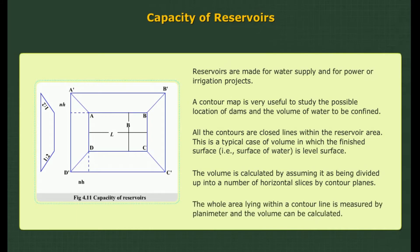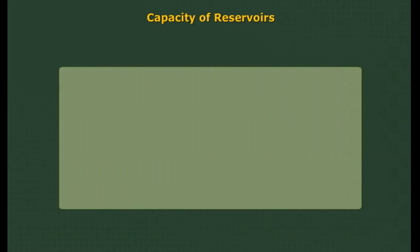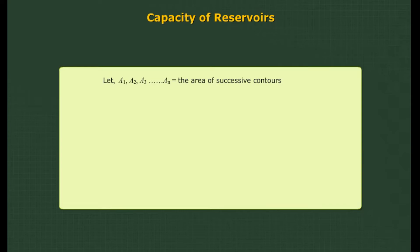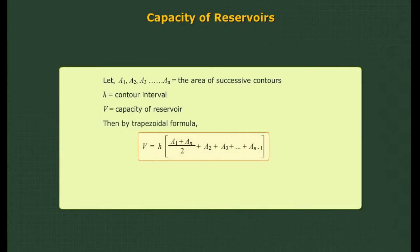The whole area lying within a contour line is measured by planimeter and the volume can be calculated. Let A1, A2, A3 and so on till An be the area of successive contours, H be the contour interval, and V be the capacity of the reservoir. Then by the trapezoidal formula and by the prismoidal rule the volume is computed.